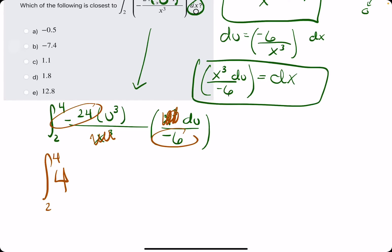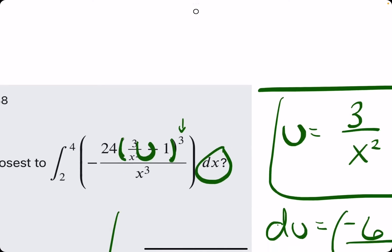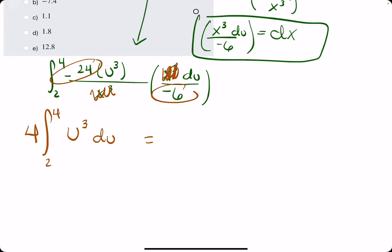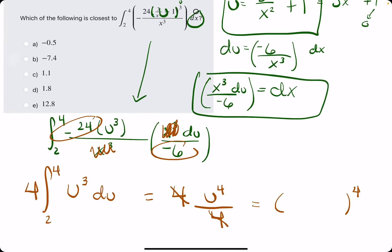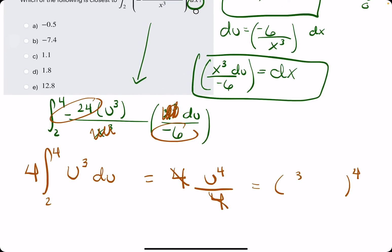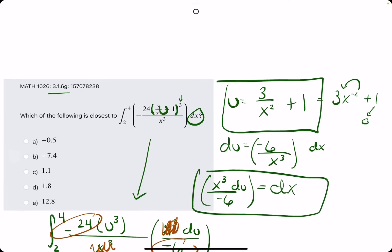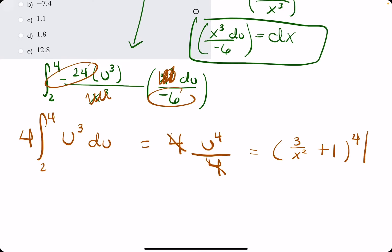We pull the 4 outside the integral. On the inside we have u cubed and du remaining — so just u cubed. We've rewritten the whole integral. Now for the antiderivative: keep the 4, add 1 to the exponent, divide by the new exponent. 4 divided by 4 cancels, leaving u to the fourth. Instead of u to the fourth, we plug 3 over x squared plus 1 back in place of u, giving us 3 over x squared plus 1, all to the fourth.